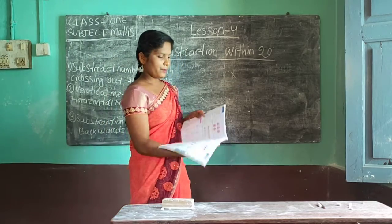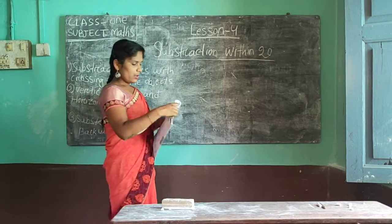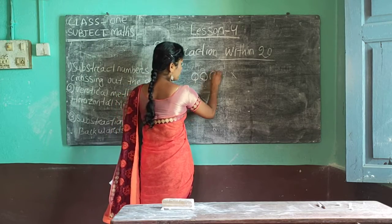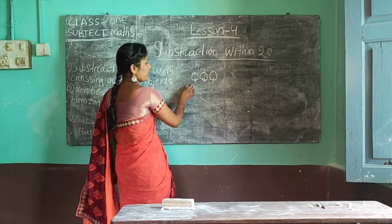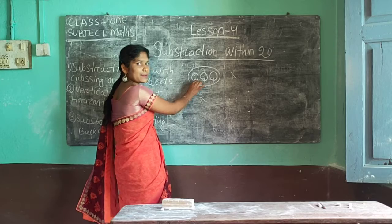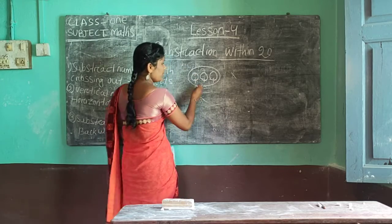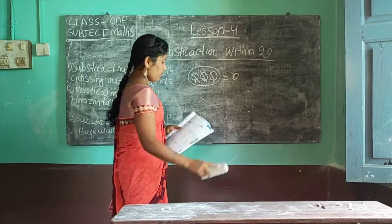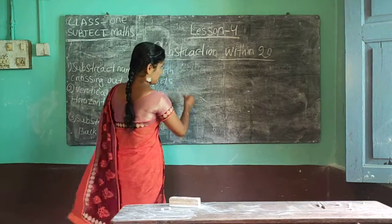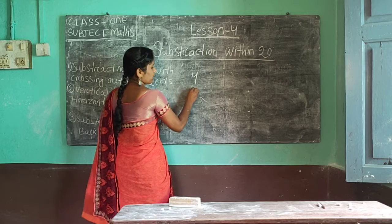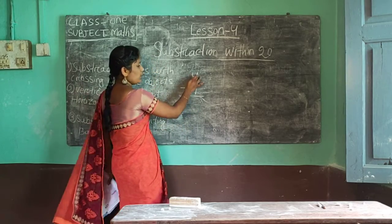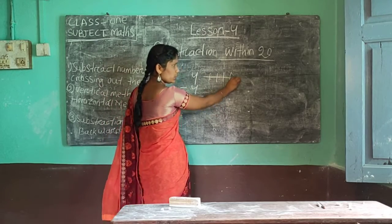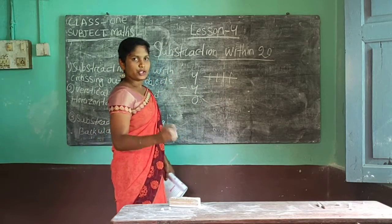Next: subtracting a number from itself. There are 3 ice creams. You ate all ice creams. Means what? 3 ice creams minus 3 — how many left? 0. So, if you have 4 chocolates and gave away 4 — 4 minus 4 — how many? 4: 1, 2, 3, 4. So, 4 you gave away. How many left? 0. So, 0 chocolates you have now.